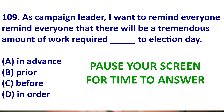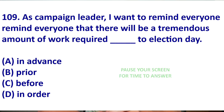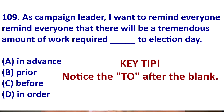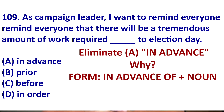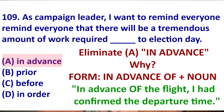Question 109. This is a tricky question. However, grammar can give us the answer. First, let's eliminate A. When we use 'in advance,' it is followed by 'of' — in advance of noun. For example, in advance of the flight, I had confirmed the departure time. I do not say 'in advance to noun.' Because we have 'to' here, it is wrong.